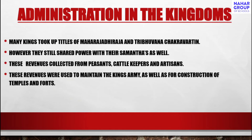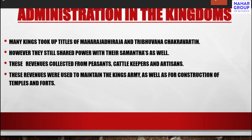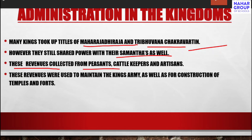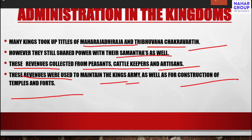In terms of administration, many kings took up titles like Maharajadhiraja and Tribhuvana Chakravartin. However, they still shared power with their samantas. These kings collected revenue from peasants, cattle keepers, and artisans. This revenue was used to maintain the king's army as well as for the construction of temples and forts.